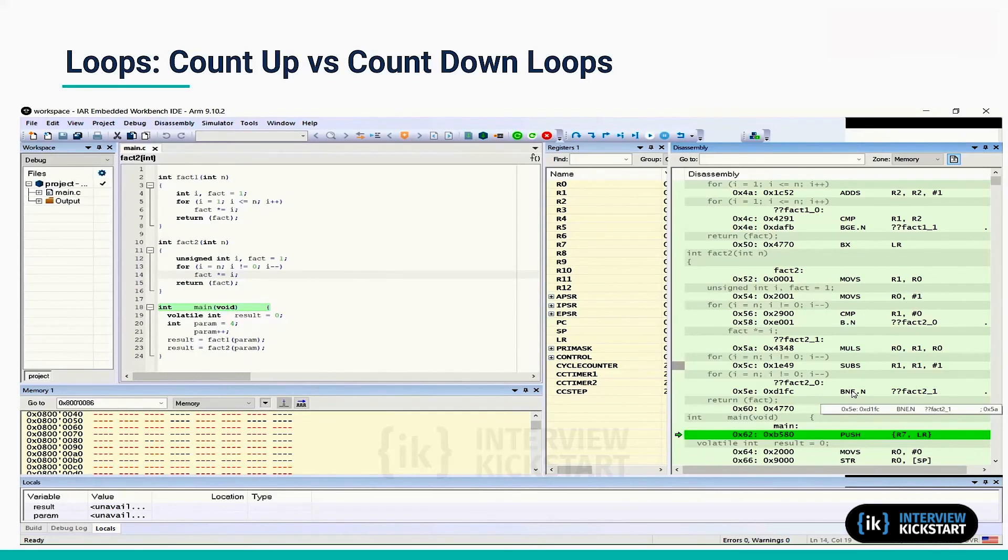So that's the idea of how a simple transformation of the code can result in one less instruction in this case. But if the number of iterations in the loop is very high, it adds up.